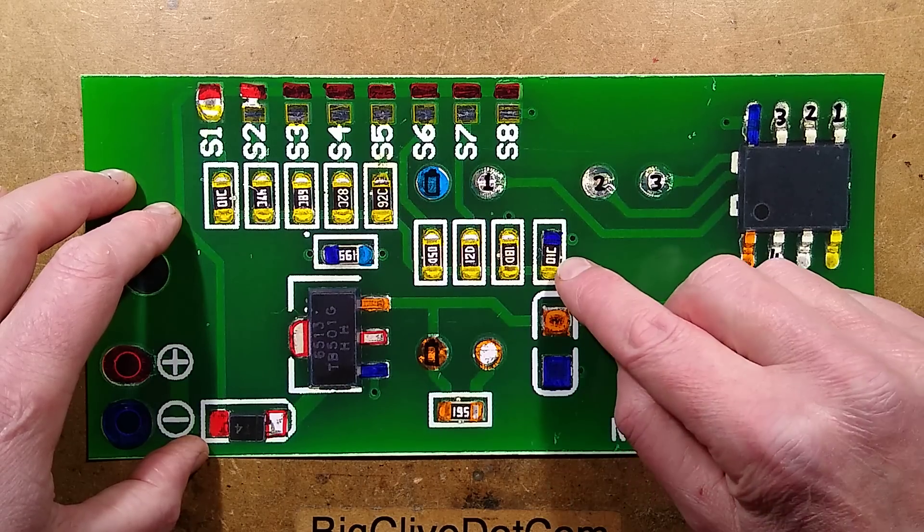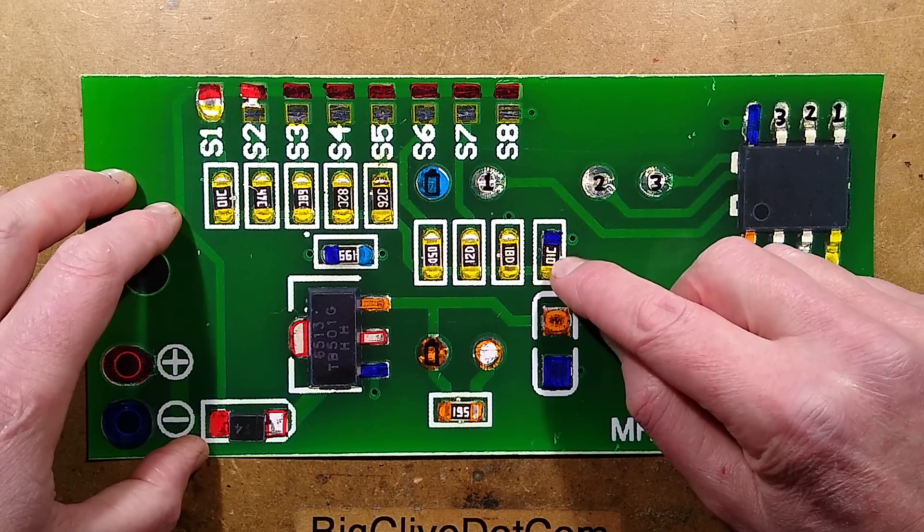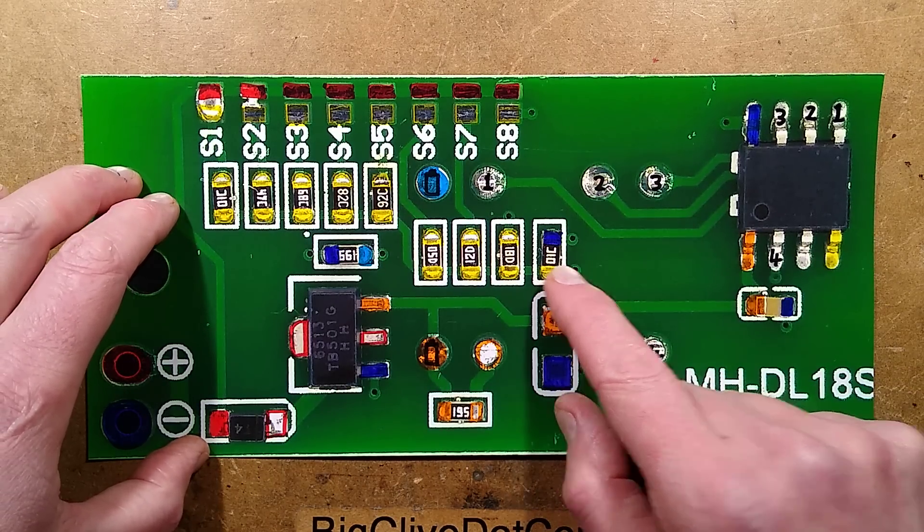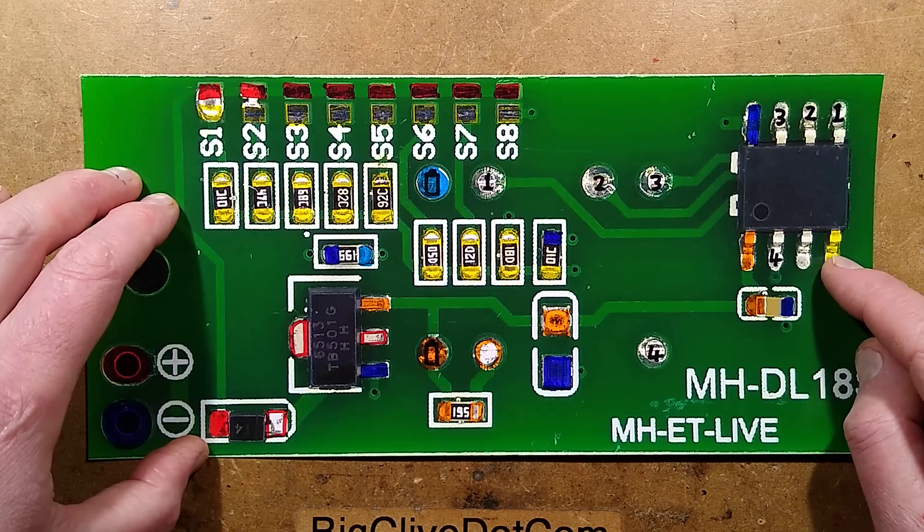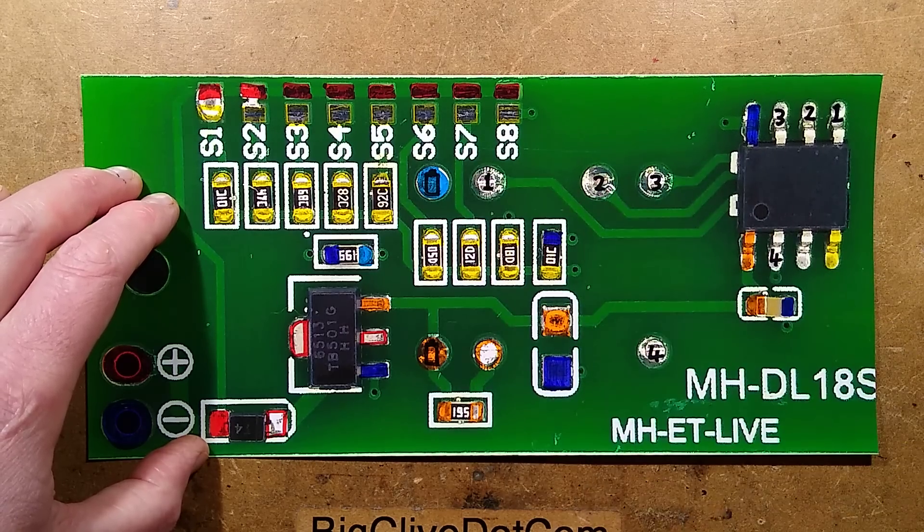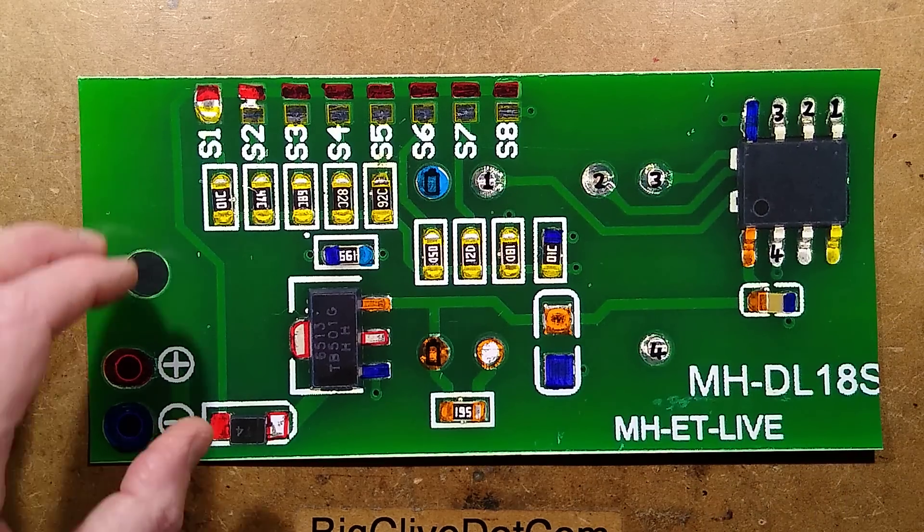But it forms a potential divider with this resistor, this 10k resistor down here O1C, and that feeds the input pin of the microcontroller which then switches the four bars. Let me show you the schematic.